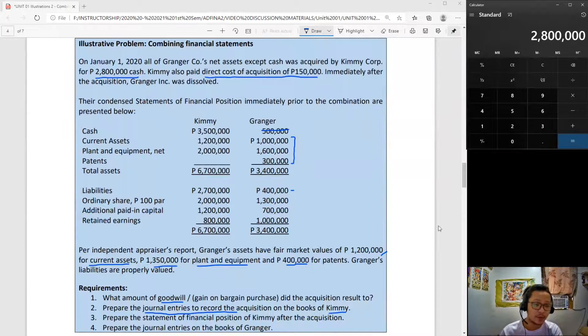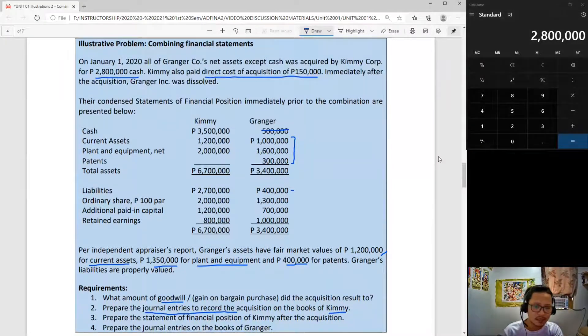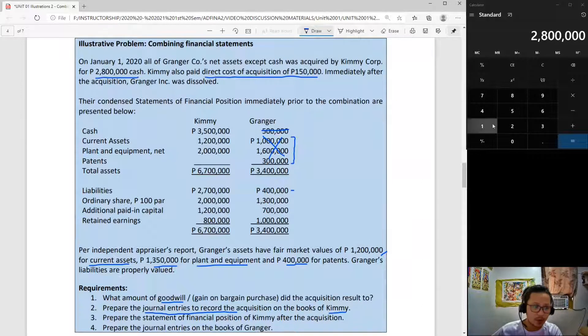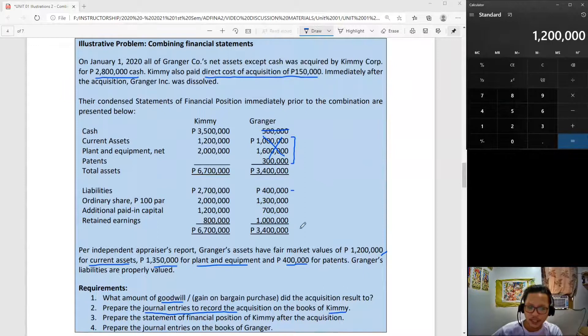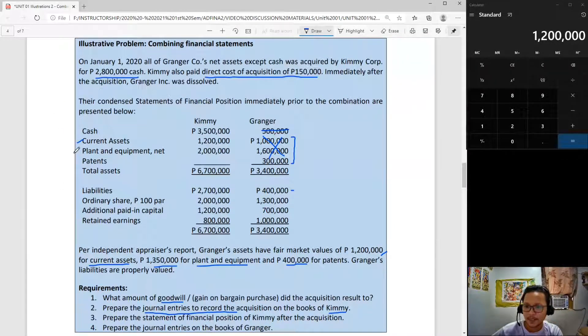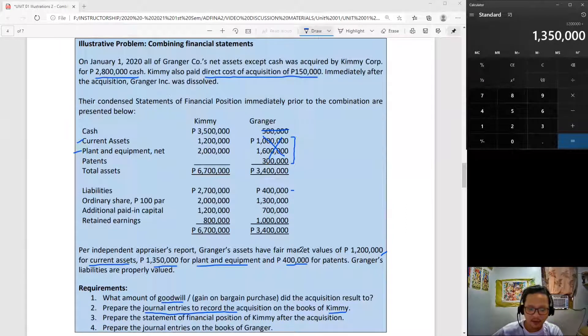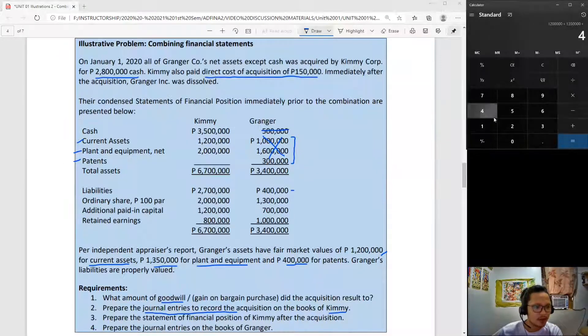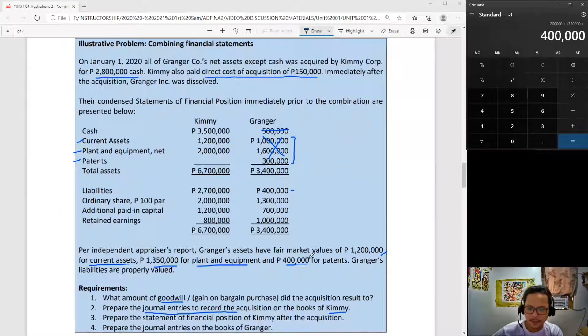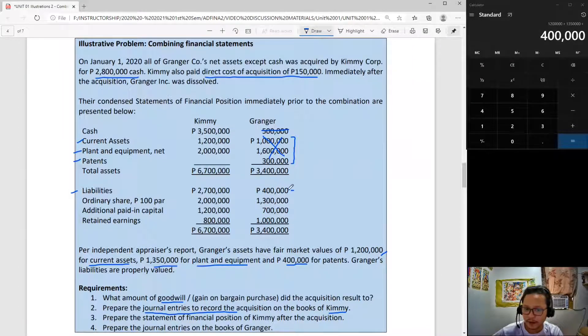To compute goodwill, first we have 2,800,000 as our acquisition cost. Since fair values of assets and liabilities are given, we can compute FINA by getting those fair values. We will not be using book values because we are on the side of Kimi and our concern is fair values. Current assets are 1,200,000, plant and equipment will be recognized at 1,350,000, your patent is 400,000 not 300,000.